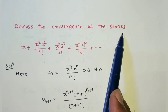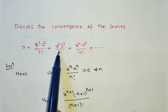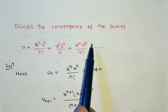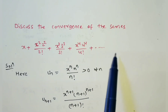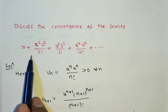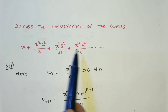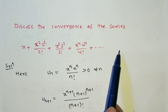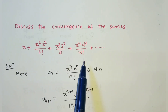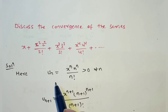Discuss the convergence of the series: x + x²·2²/2! + x³·3³/3! + x⁴·4⁴/4! and so on. Here, they have given the sum of terms, not the nth term directly. Four terms are given, so we need to write the nth term.